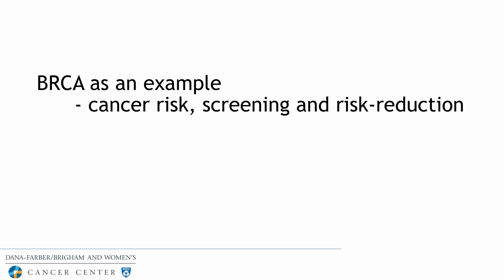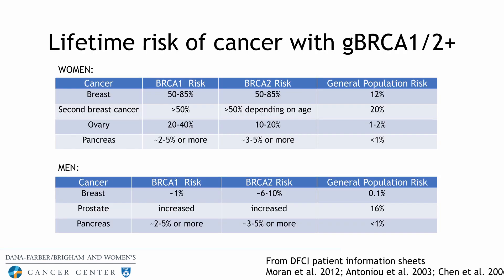Using BRCA as an example: the lifetime risk of breast cancer is 50–85% compared to 12% in the general population. For ovarian cancer, the risk is 20–40% with BRCA1 and 10–20% lifetime with BRCA2. For both men and women with a BRCA mutation, there's an increased risk for pancreatic cancer, and we are currently including patients in a pancreatic cancer screening protocol to evaluate whether screening is appropriate for this population.